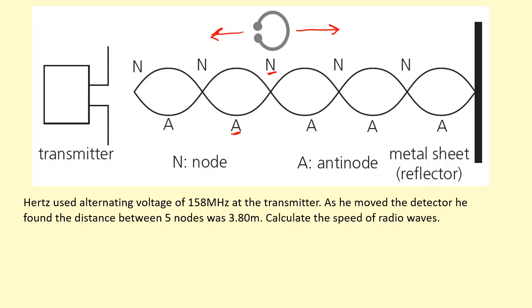For example, in this question here, he was able to measure the distance between five nodes. So for example, from one, two, three, four, five. So between five nodes. But as you can see, that's four loops. So what you need to do is divide that distance between the five nodes by four. So always do 3.8 divided by the number of nodes minus one. So this gives me a distance of 0.95 meters.